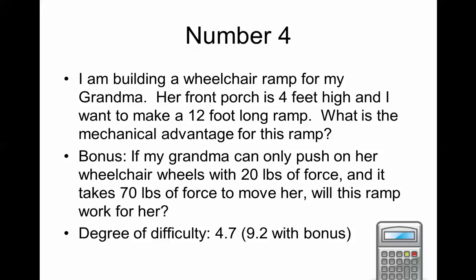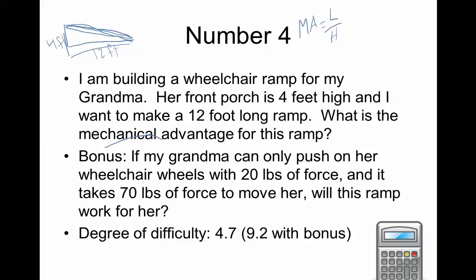Question four: I'm building a wheelchair ramp for my grandma. Her front porch is four feet high, and I want to make a 12-foot long ramp along the ground. What is the mechanical advantage of this ramp? The ramp extends 12 feet along the ground and rises four feet. For mechanical advantage, we don't use the ground length — we need the actual slant length of the ramp, which is what grandma's wheelchair travels along.